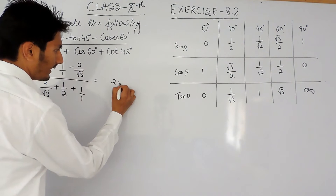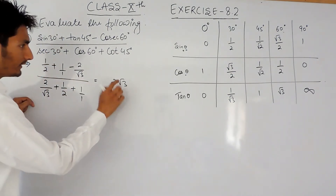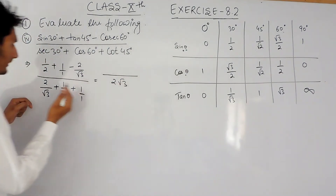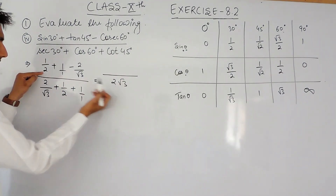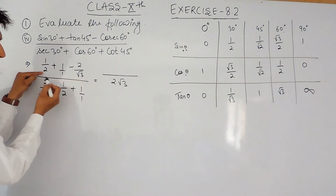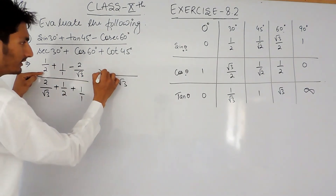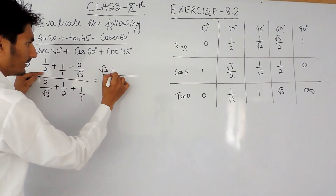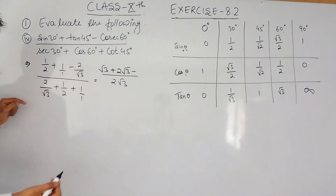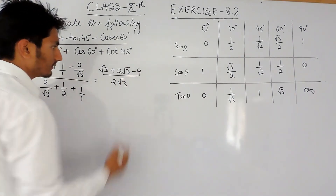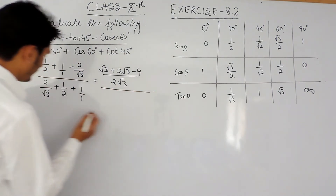The LCM of 2, 1, and root 3 will be 2 root 3. When divided by 2, the 2s cancel out and only root 3 remains. Root 3 multiplied by 1 will be root 3, and the denominator will be 2 root 3.